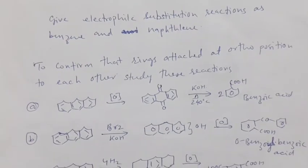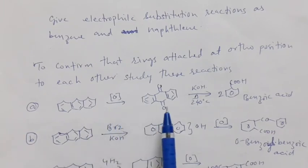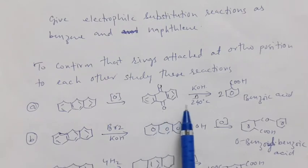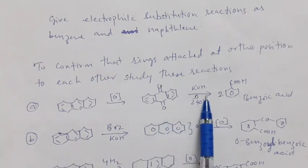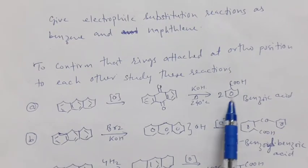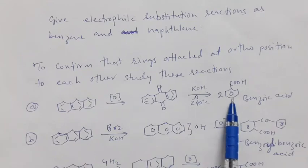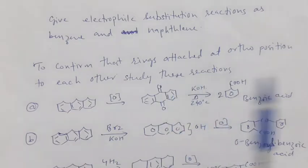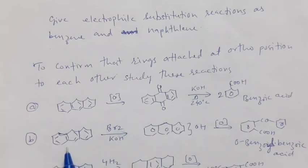First, anthracene is oxidized and it gives anthraquinone. Anthraquinone on heating at 240 degrees centigrade with KOH gives 2 molecules of benzoic acid. This confirms that anthracene has at least 2 benzene-like rings.